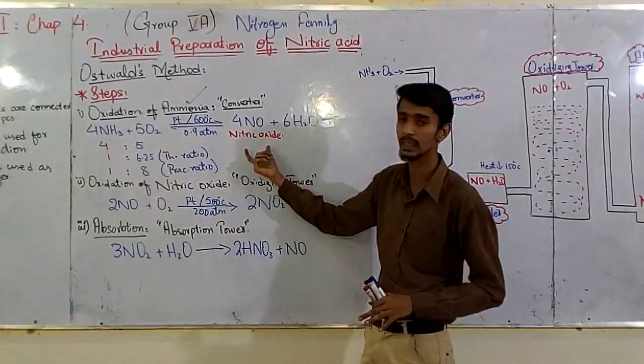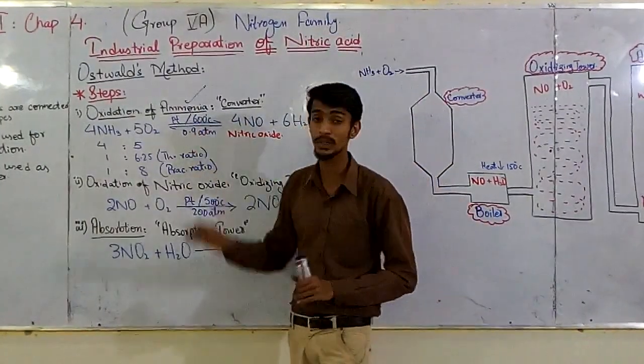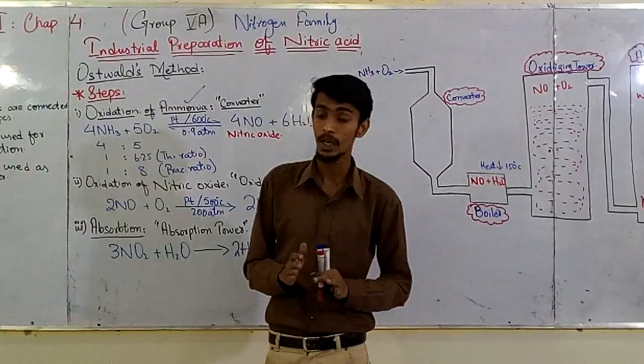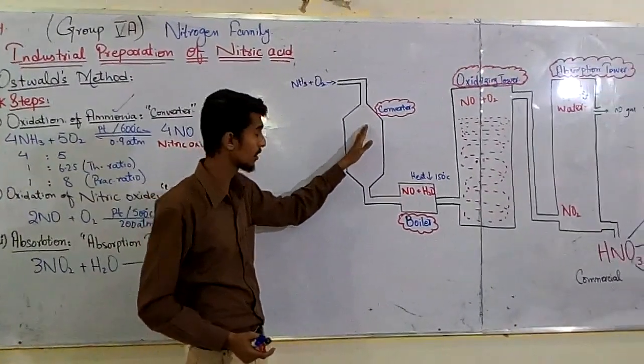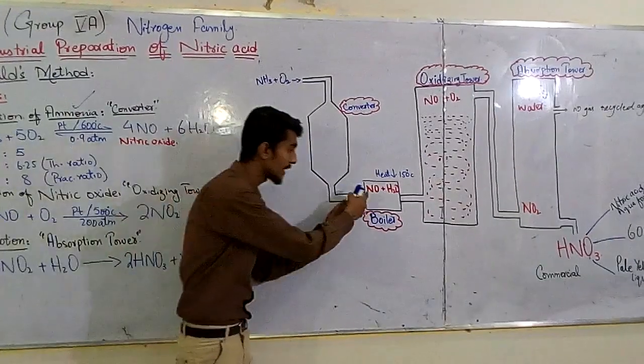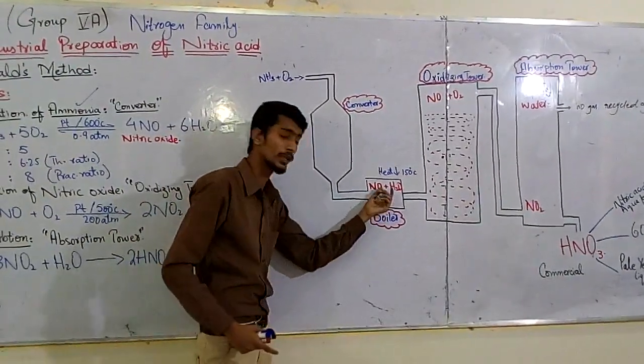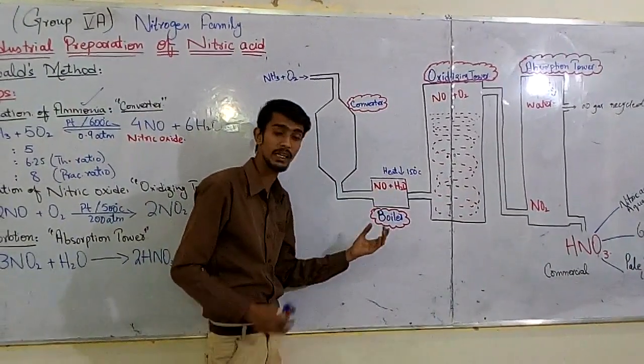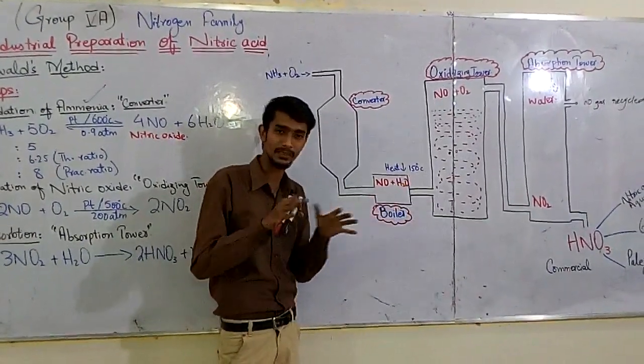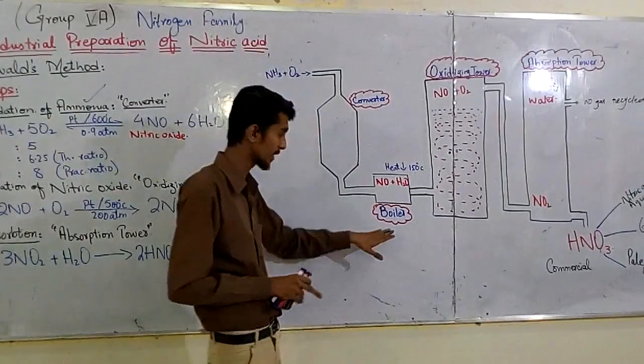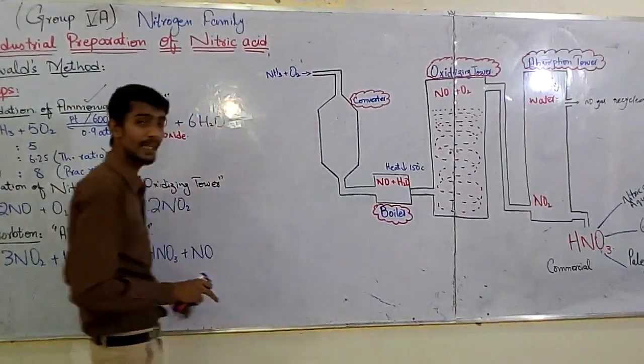Now, nitric oxide goes to the converter and then to the boiler where the temperature is reduced to about 150 to 180 degrees centigrade. The temperature is reduced in the boiler. Then we go to the next step.